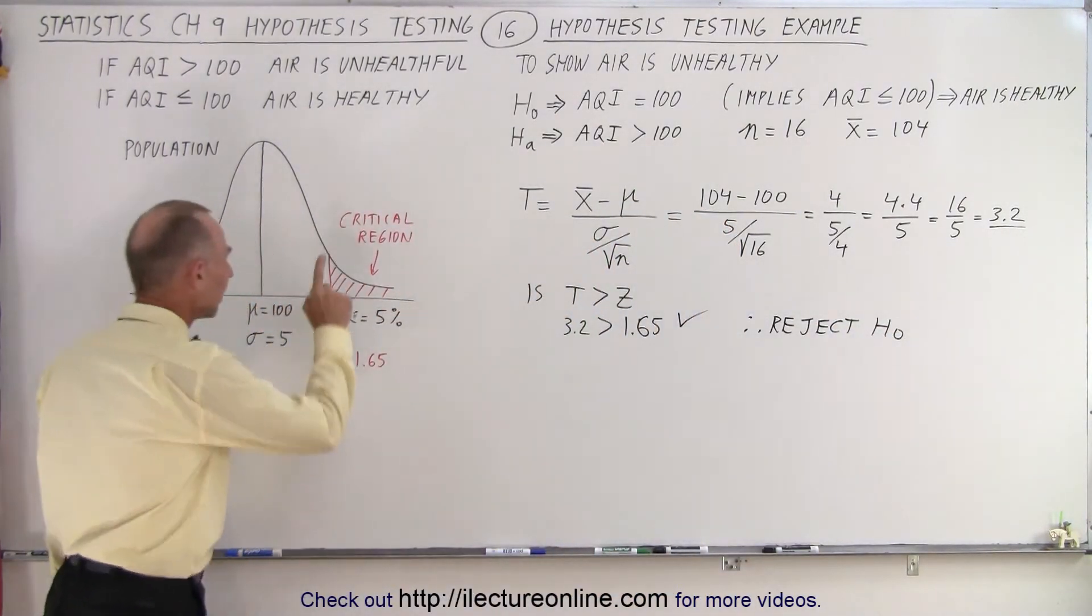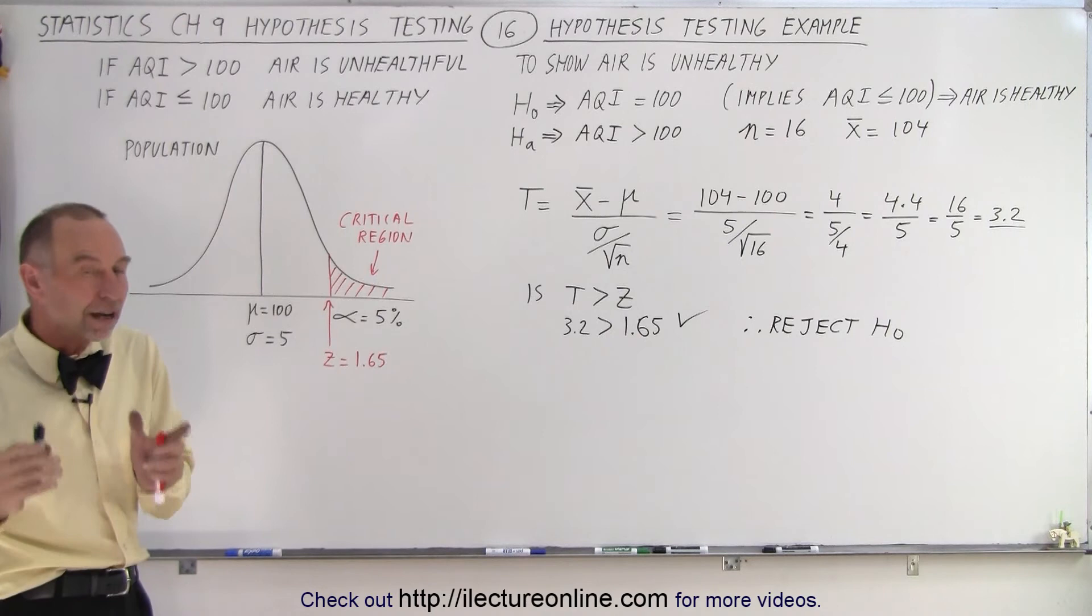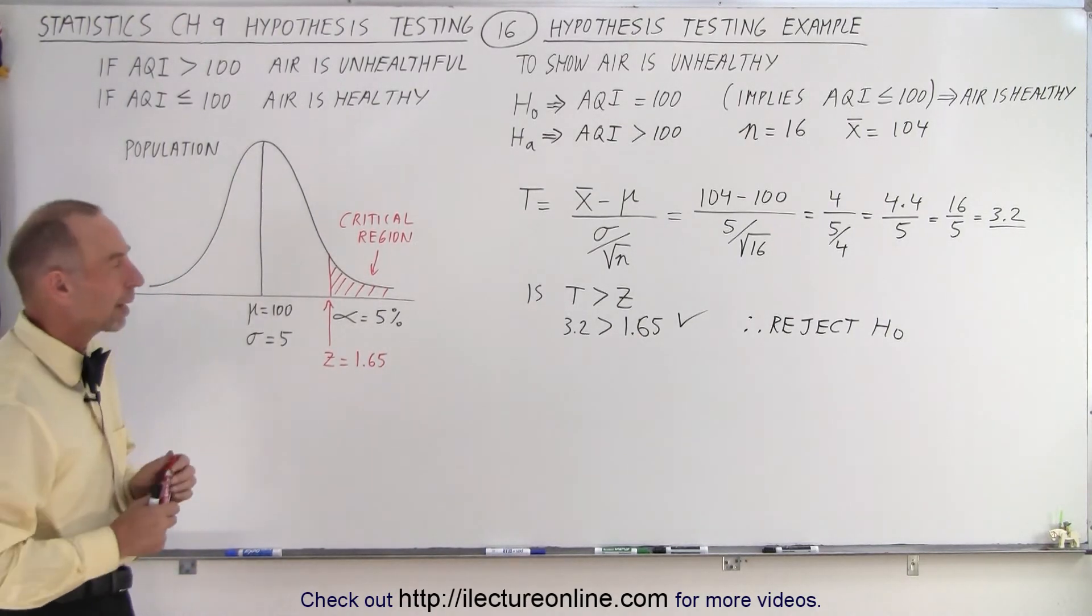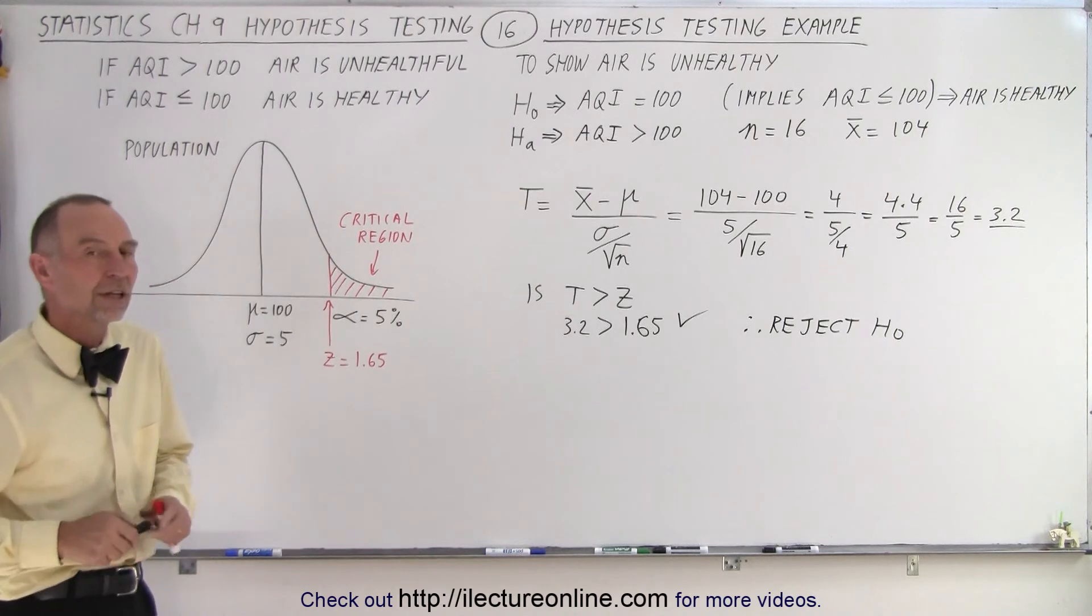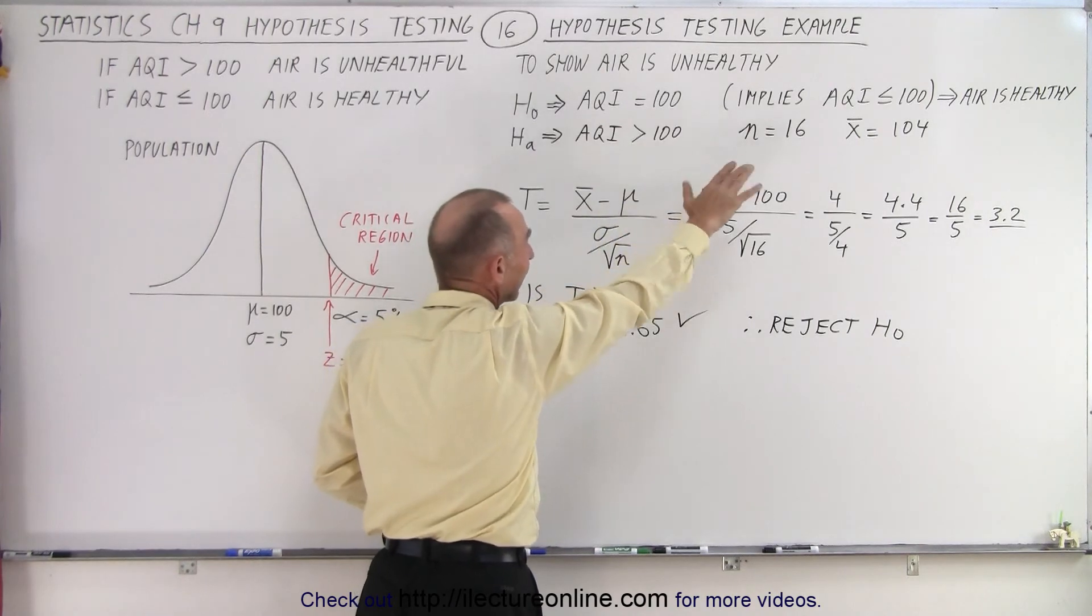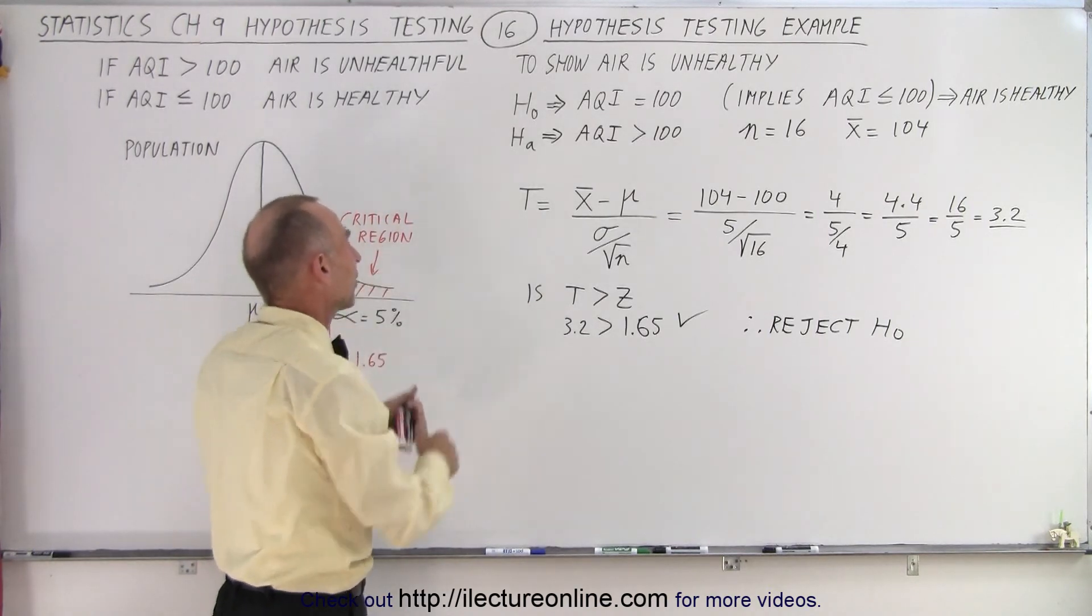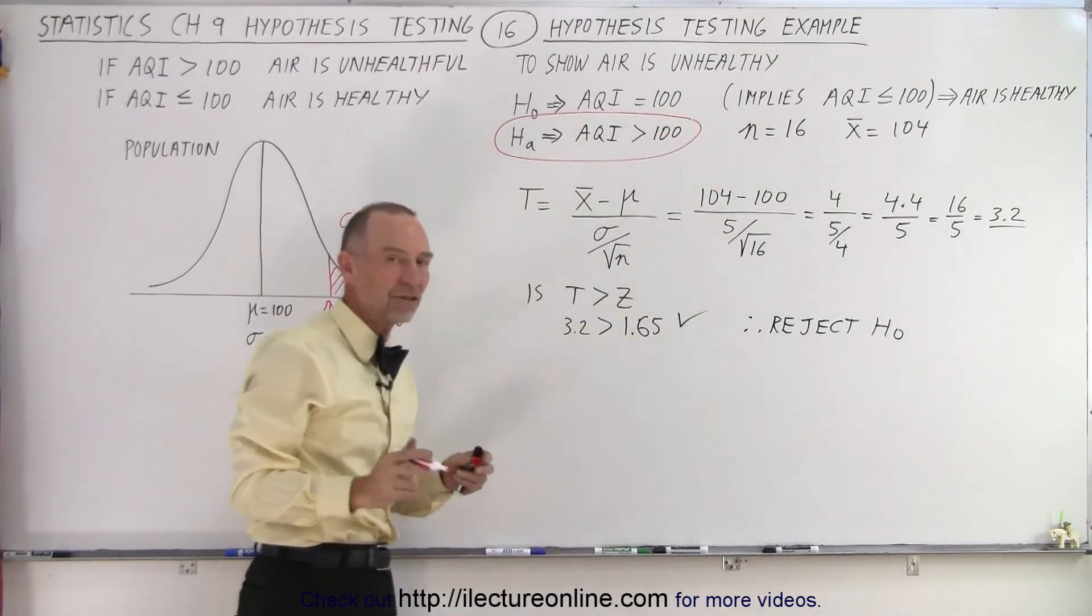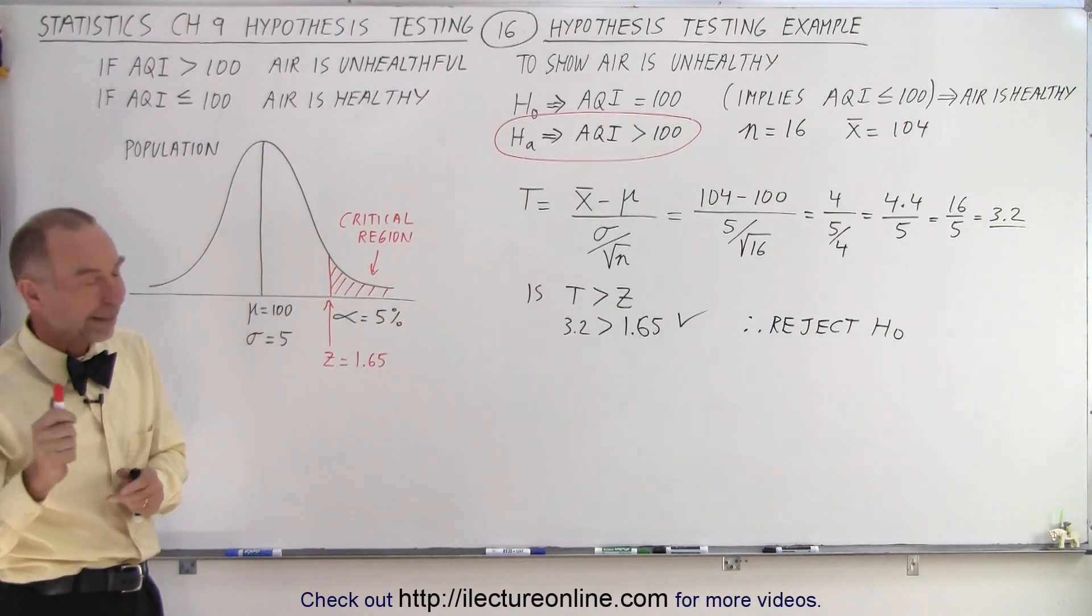And we're going to do that with a level of significance of 5%, which means that we have a level of confidence of 95% that we're going to correctly reject the null hypothesis. So we're rejecting that the AQI index is 100 or less, that the air is healthy. Which means if we can reject the null hypothesis, then the alternate hypothesis must be true, which means that the AQI is greater than 100, which means that in the location we're testing, the air is indeed unhealthy. And that is how it's done.